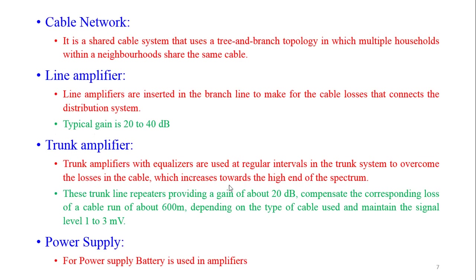Cable info: It is a shared cable system that uses a tree-and-branch topology in which multiple households within a neighborhood share the same cable. The cable goes out and through taps the signal is provided to the subscribers. Line amplifier: A line amplifier is inserted in the branch line to compensate for cable losses that occur when connecting to the distribution system. Line amplifiers have a typical gain from 20 dB to 40 dB.